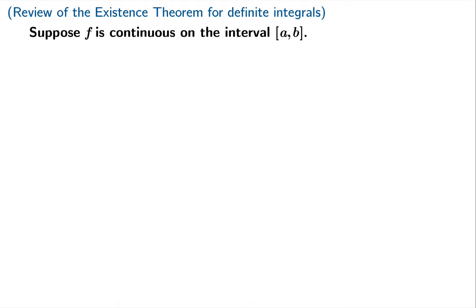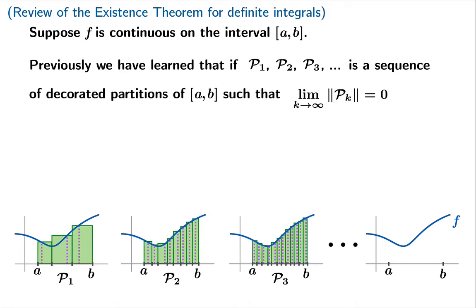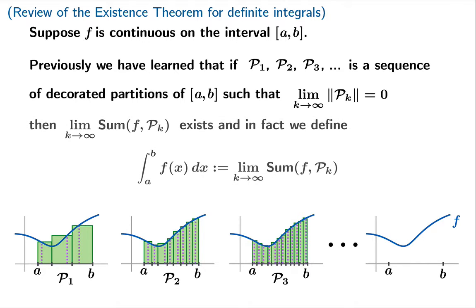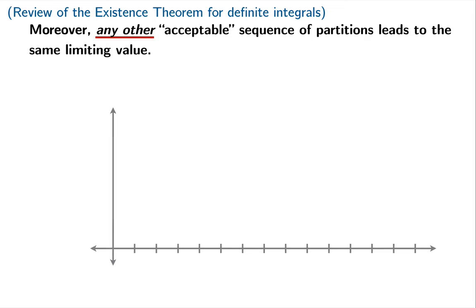Suppose f is continuous on the closed interval from a to b. Previously we've learned that if you build a sequence of decorated partitions for the closed interval such that the sequence of partition sizes goes to zero, then you can calculate the associated Riemann sums and the limit of that sequence of Riemann sums is guaranteed to exist. We define the definite integral to equal that limiting value of Riemann sums.